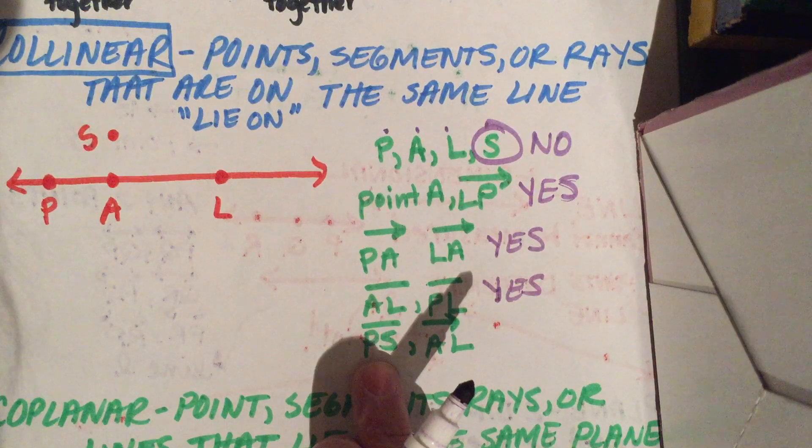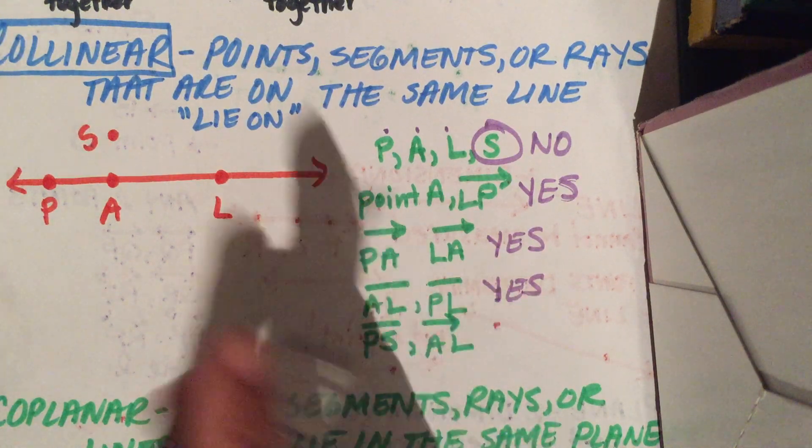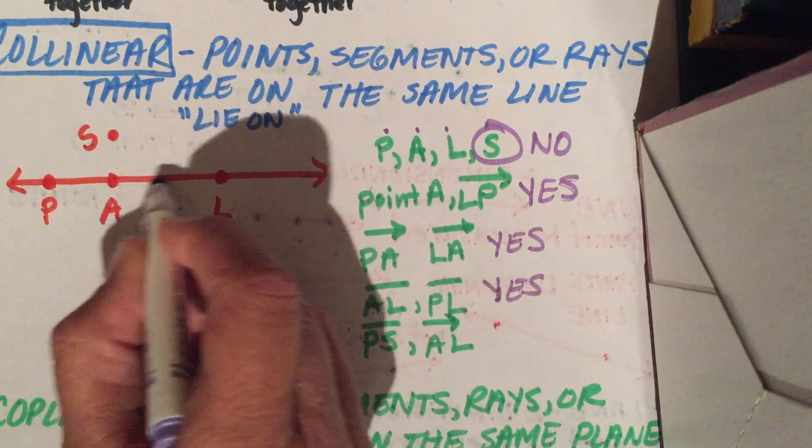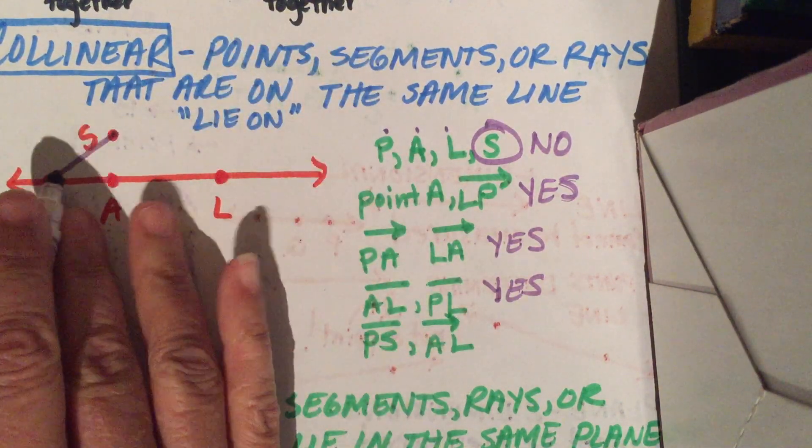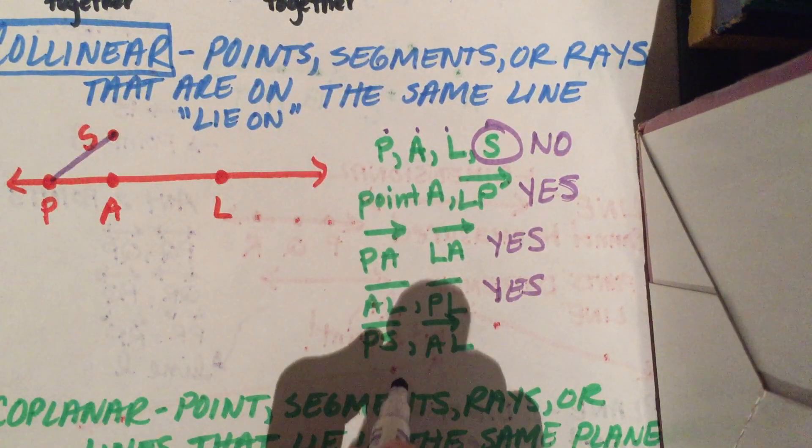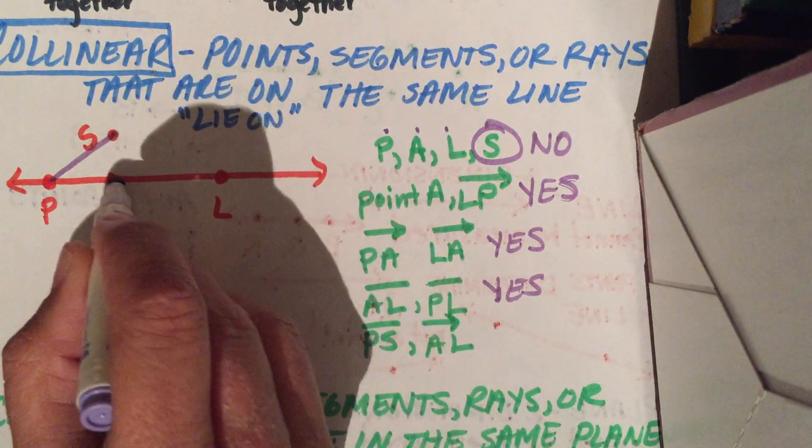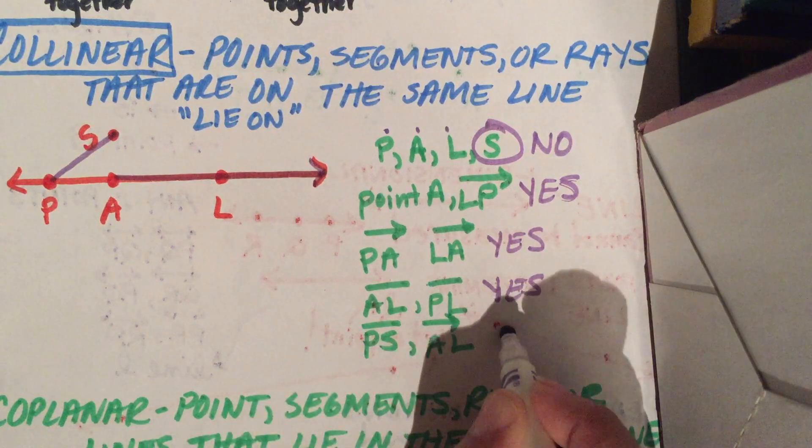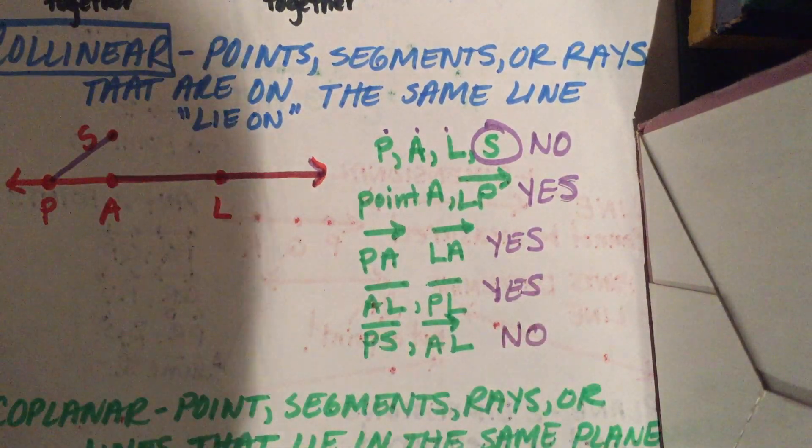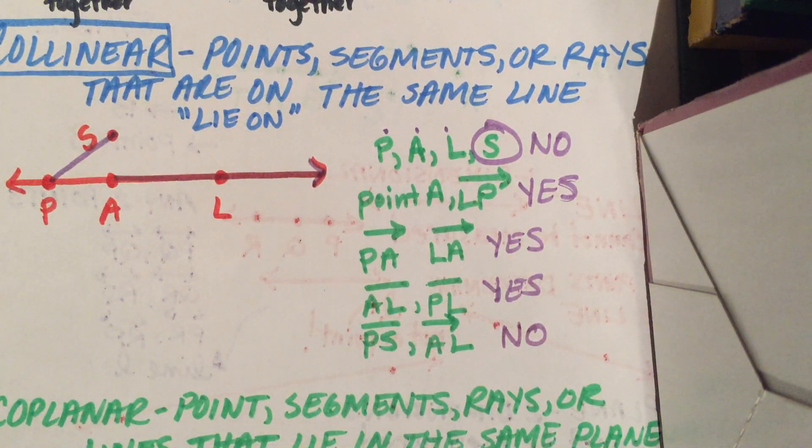How about segment PS and ray AL? Ray AL is here and segment PS is here. Are these two on the same line? No, they are not. So those would not be collinear. That's how you determine if points, segments, or rays are collinear. They have to be on the same line.